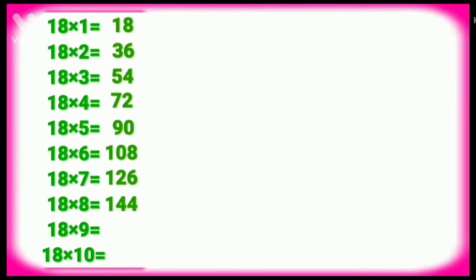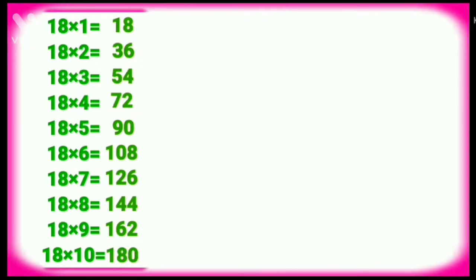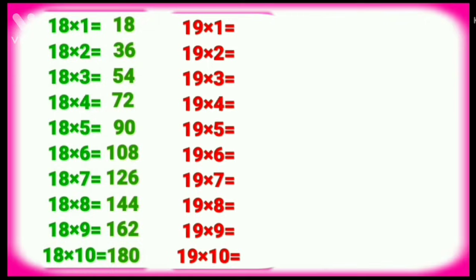Eighteen eights are one forty-four. Eighteen nines are one sixty-two. Eighteen tens are one eighty. Table of Nineteen. Nineteen ones are nineteen. Nineteen twos are thirty-eight.